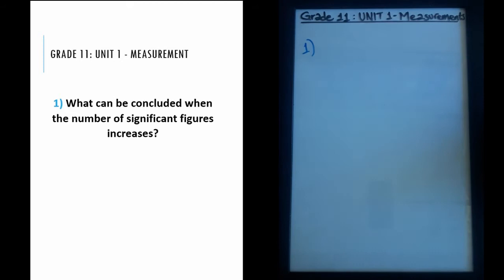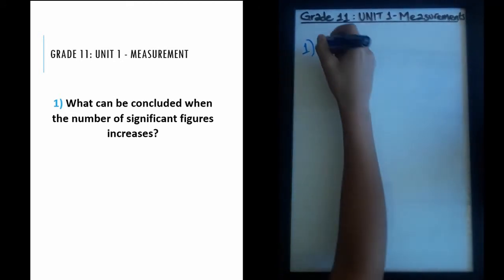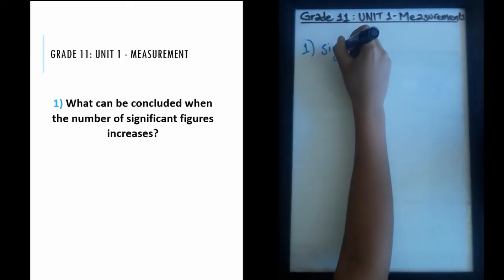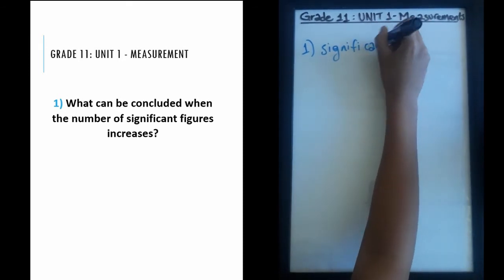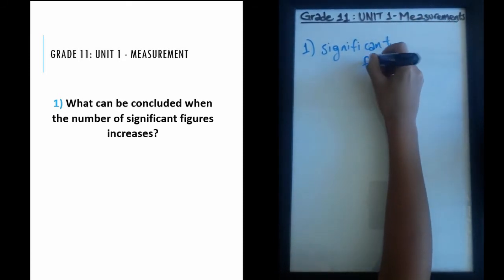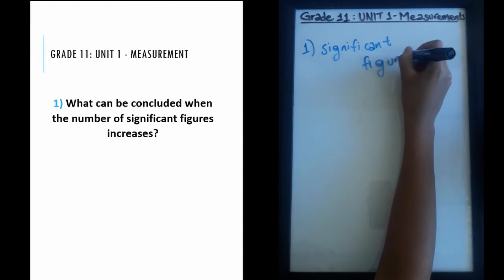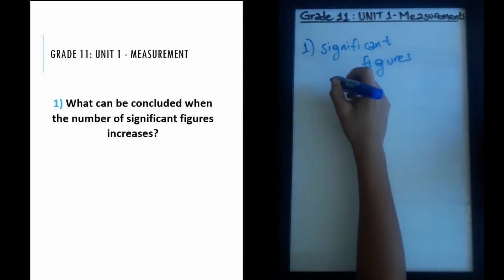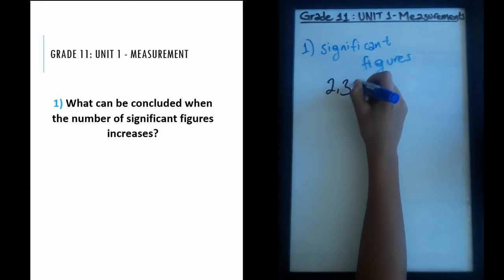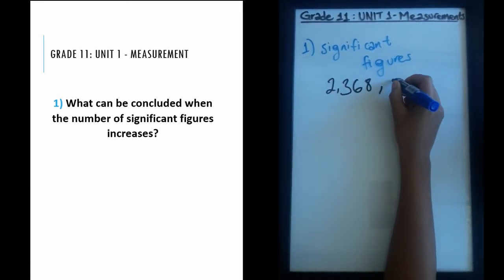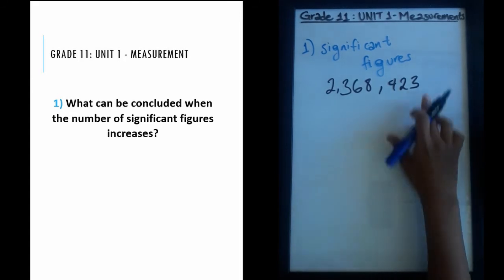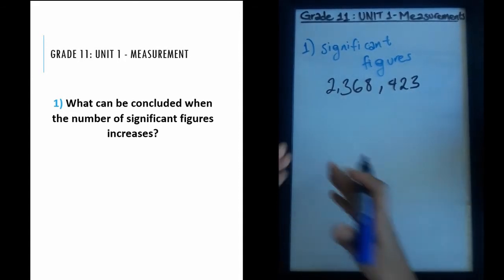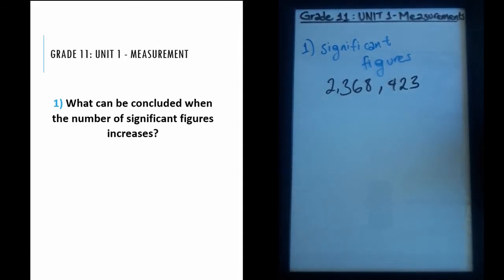Back to the question. This first question asks us about significant figures. Before we get into detail about what happens if they increase and decrease, let's first talk about what significant figures are. Significant figures are closely related to the concept of scientific notation, and scientific notation is just how you write a number in a more appropriate form. What I mean by that is, let's say we have a huge number like 2,368,423.